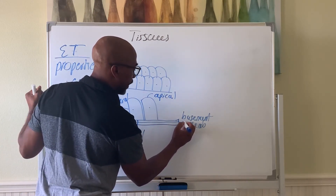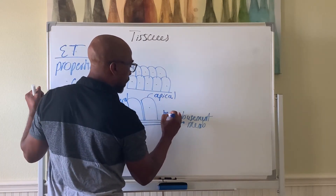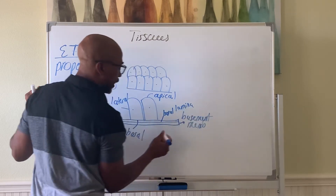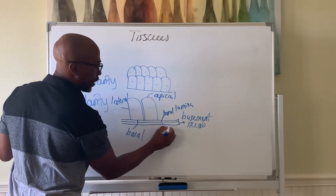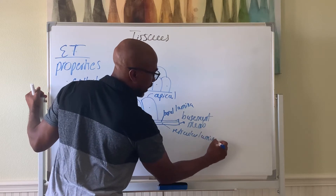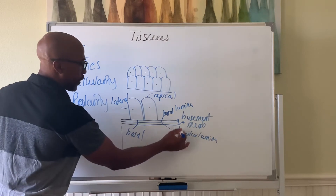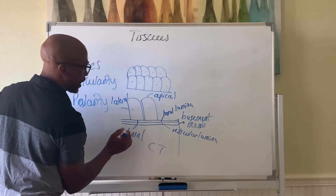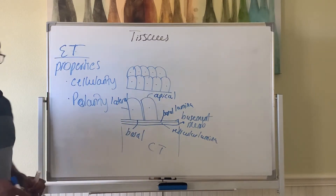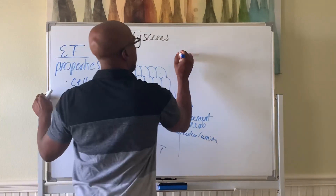The basement membrane has two layers: the upper layer is called the basal lamina, and the lower layer is called the reticular lamina, which is made by the connective tissue. Normally, epithelial tissue sits on top of connective tissue, with the basement membrane in between.